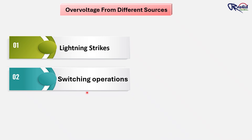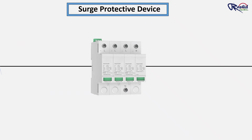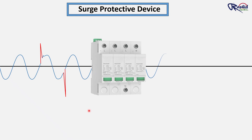Switching operations include turning on or off heavy motors, elevators, or HVAC systems. There is also fault clearing — when a breaker or fuse disconnects a fault like a short circuit, the sudden interruption can create a small voltage spike. This spike lasts a very short interval but can still travel through the system. The SPD quickly diverts this spike to earth, keeping the equipment safe.